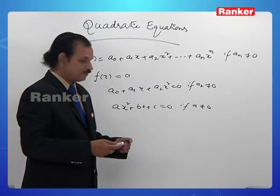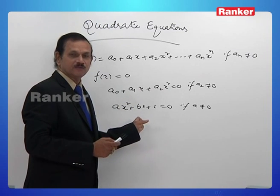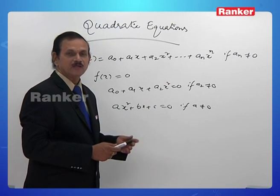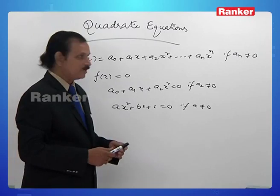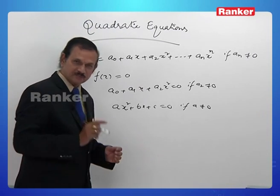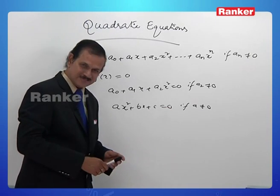Otherwise, if it only happens to be 0, it is not a quadratic equation. It can then become a linear equation. But we want to have a quadratic equation, so a not equal to 0 must happen.